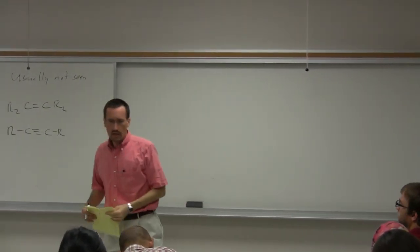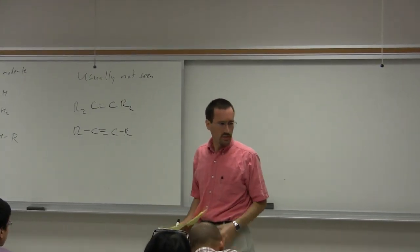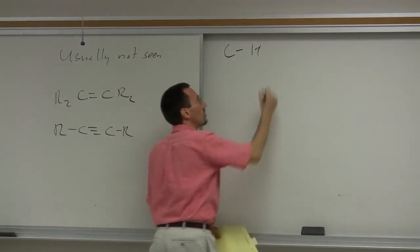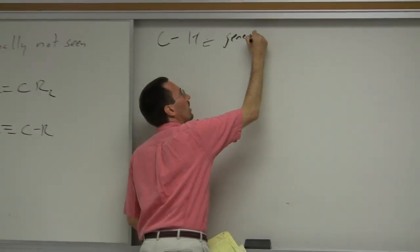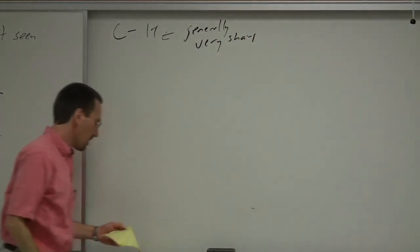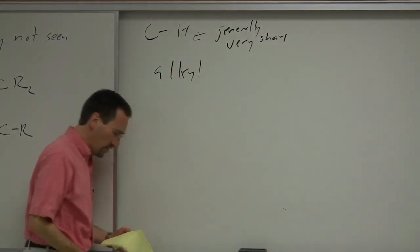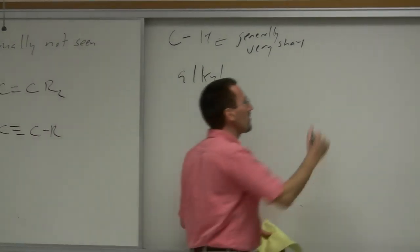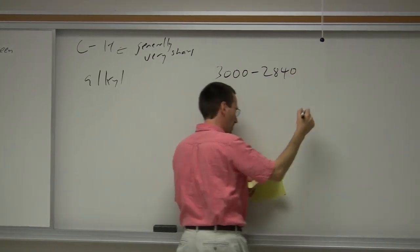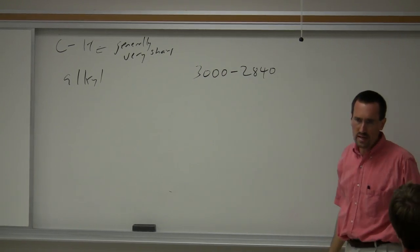We talked about methylene groups — the asymmetric stretch and symmetric stretch, and CH groups. CH stretches are generally very sharp. Alkyl CH stretches are generally not that informative, but usually they fall between about 3,000 and about 2,840 wavenumbers.